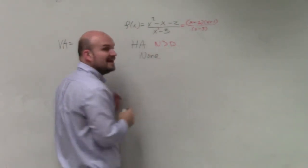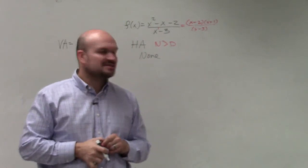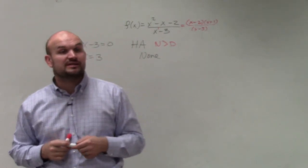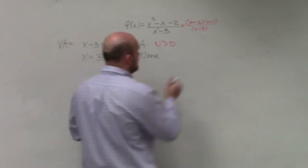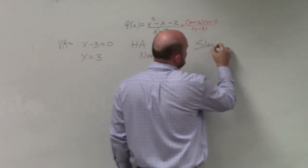There is none. Every single time the degree in the numerator is greater than the degree in the denominator, you do not have a horizontal asymptote. But that does allow us to have a slant asymptote.